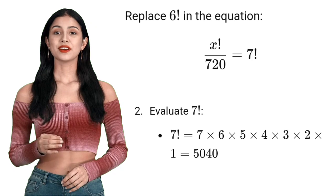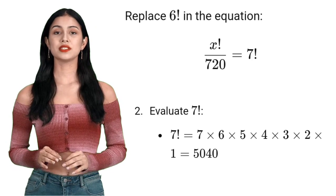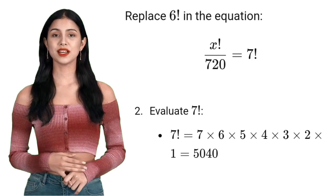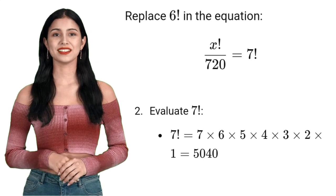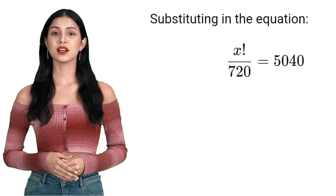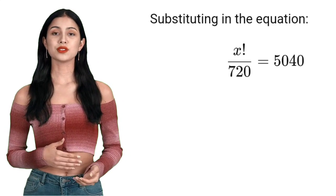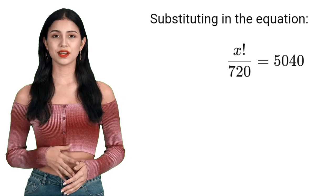Next, 7 factorial equals 7 times 6 times 5 times 4 times 3 times 2 times 1, which equals 5,040. So, the equation now becomes x factorial divided by 720 equals 5,040.